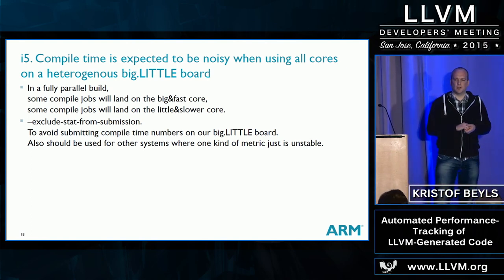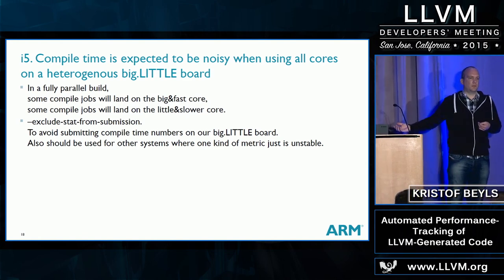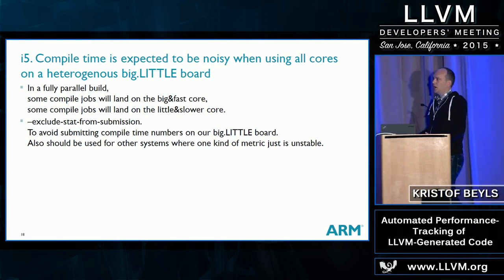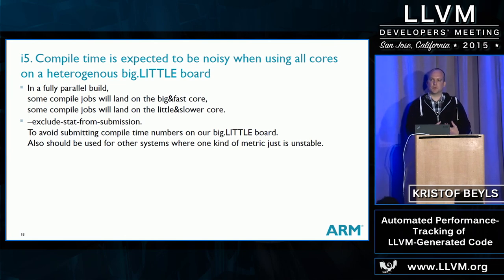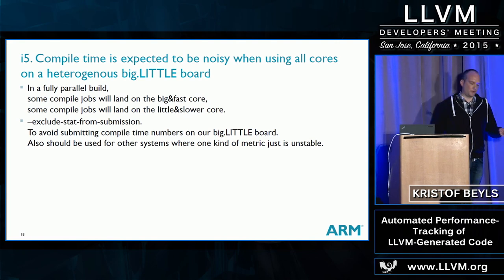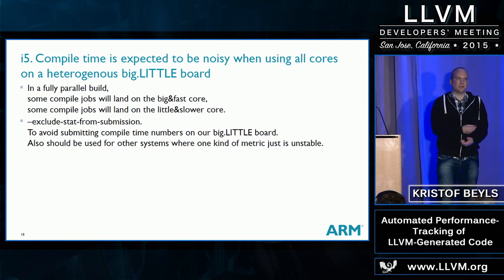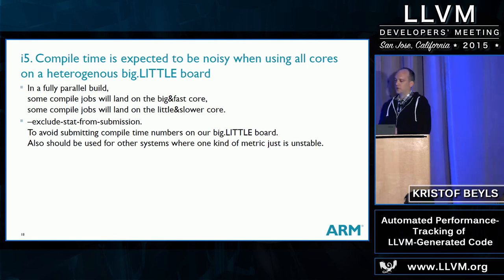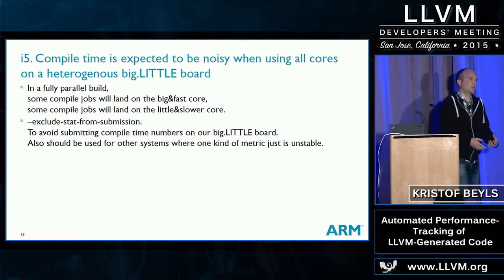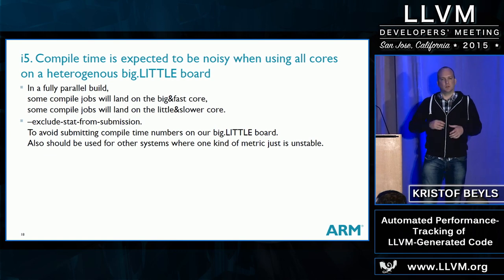On the big.LITTLE board, when building programs using all six cores, build jobs sometimes end up on A53 and sometimes on A57. So compile time numbers were extremely noisy — you wouldn't expect them to be stable. We added a flag to LNT so that when setting up a benchmarking bot, if you know some metrics will be garbage, you can just not submit them to the server.